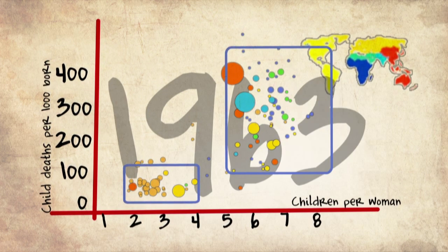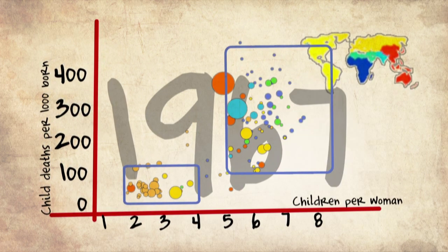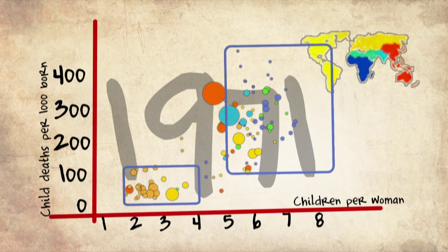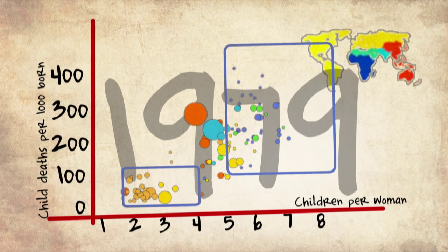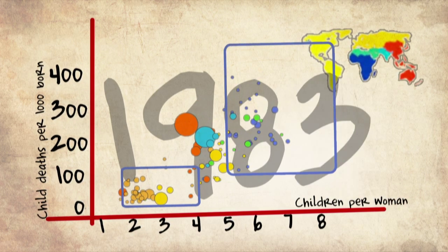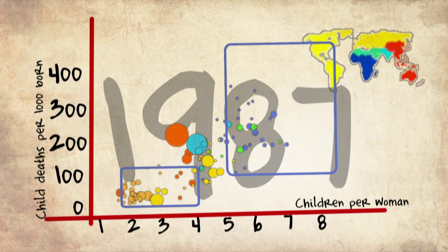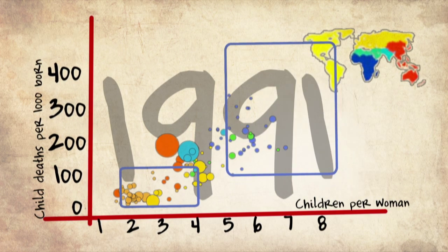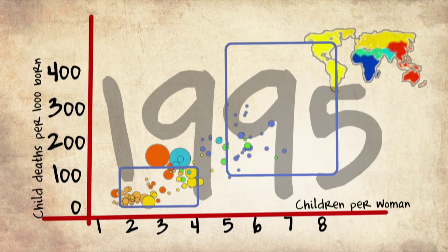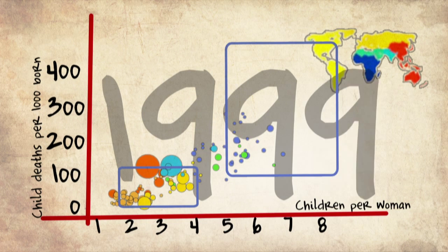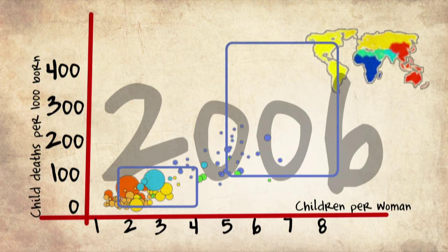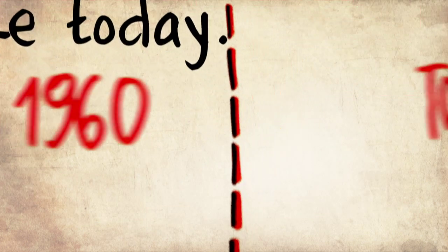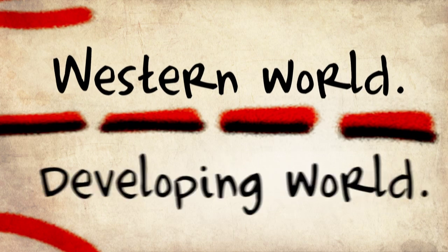What I want you to see with your own eyes is the relation between falling child mortality and decreasing family size. Coming down with eradication of smallpox, better education, and health service — China comes into the Western box, Brazil is in the Western box, India is approaching it, and the first African countries are coming in. There is no longer such a thing as a Western world and a developing world.